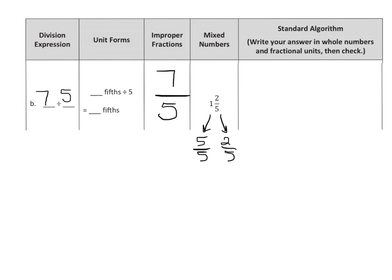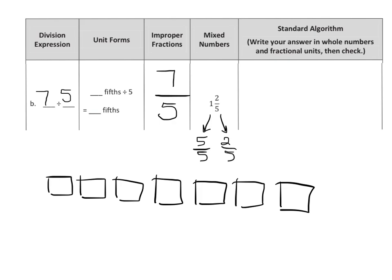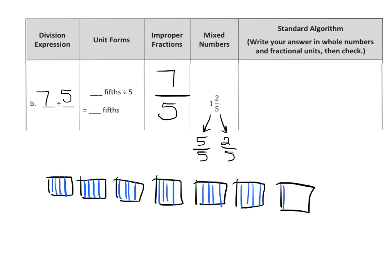Now, like I just showed you in the previous example, if we have 7 wholes and we're going to cut each one of those into 5 pieces, that means we now have 35 fifths. And 35 fifths divided by 5 gives us 7 fifths. And we knew that because it says so here — 7 fifths. See how all of these connections are happening?